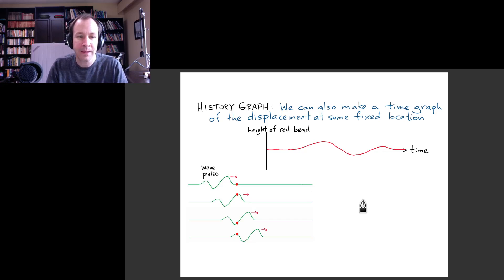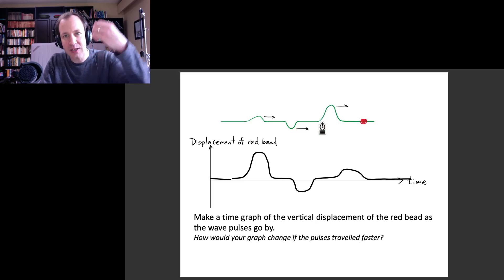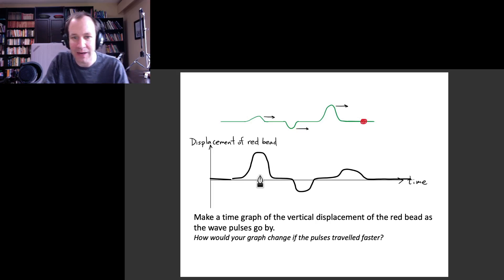What we see is that it's kind of a similar shape to this picture, except it's reversed in terms of the order of these peaks in the picture. Because it's traveling from left to right, this peak on the right is the one that actually encounters our bead first in time, so that's showing up first in our time graph.